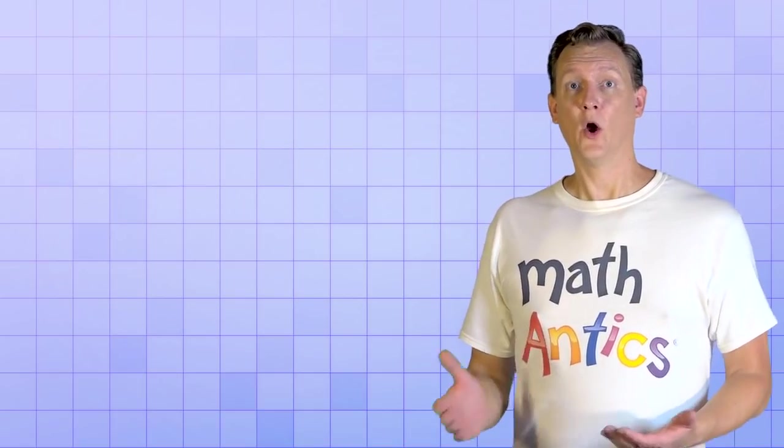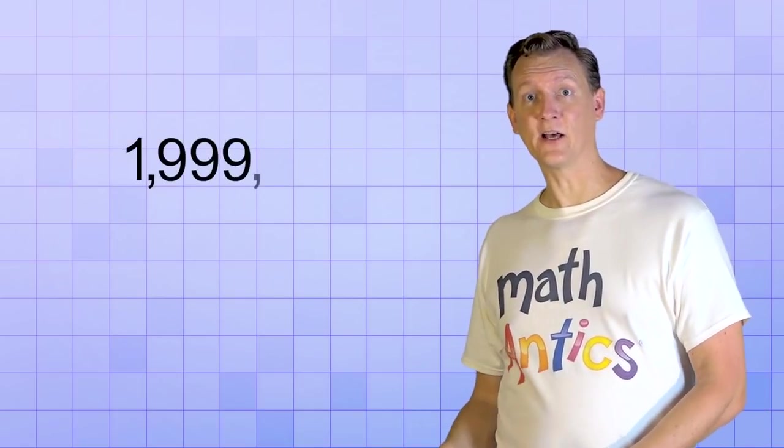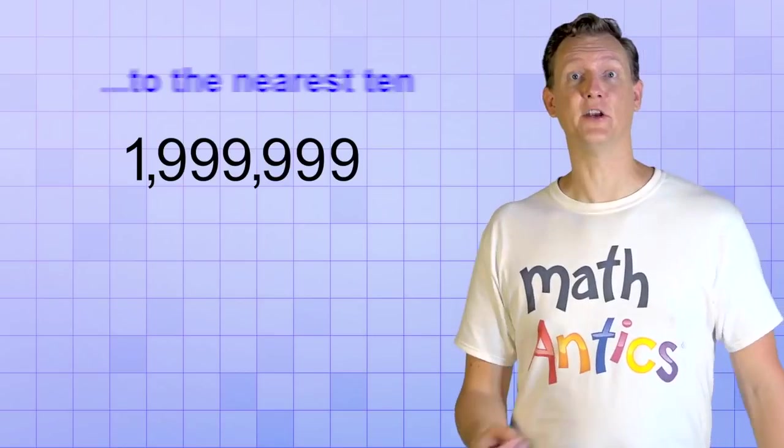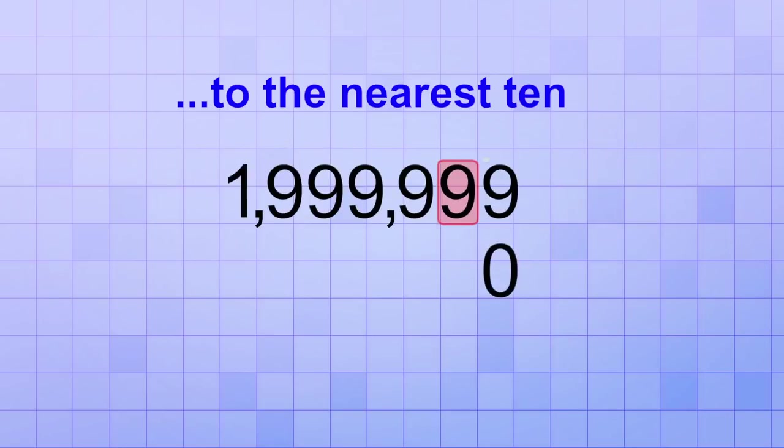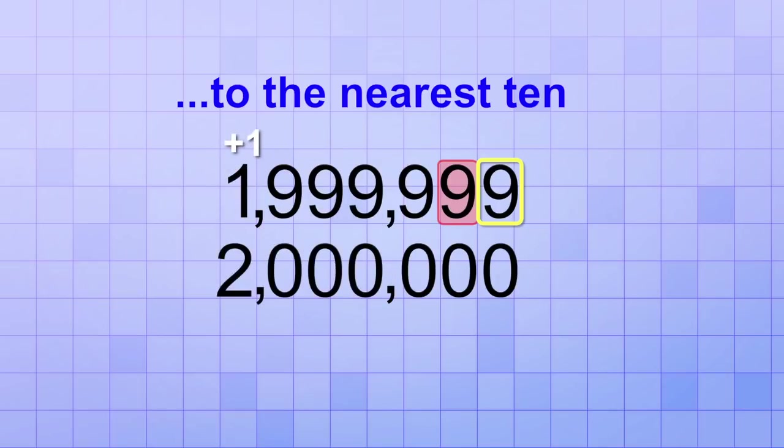Like what if you need to round 1,999,999 to the nearest 10? The 9 in the 1's place tells us that we need to round our target digit up by 1. But it's already a 9, so we need to 0 it and increase the next number place. But that's already a 9, so we need to 0 it and increase the next number place. But that's already a 9, and so the pattern continues until we end up with 2 million as our final rounding number.